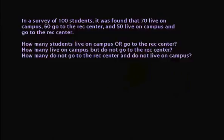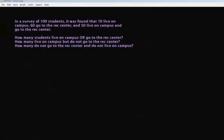In a survey of 100 students, it was found that 70 live on campus, 60 go to the rec center, and 50 live on campus and go to the rec center. We have three questions: How many students live on campus or go to the rec center? How many live on campus but don't go to the rec center? And how many do not go to the rec center and do not live on campus?